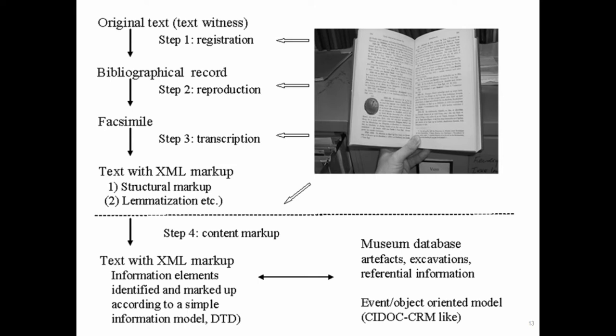The idea is that you need the bibliographical record — you need to know what you're talking about, the context — then you create the facsimile, then you create the text with XML markup, structural but also more detailed. That semantic markup is then connected to the museum database. So you have a connection between the XML markup and some sort of data model. In our case, in this group of concepts, we will use CRM elements — objects and properties — and in a real running system, this will probably be an implemented database where you then have the mappings available.